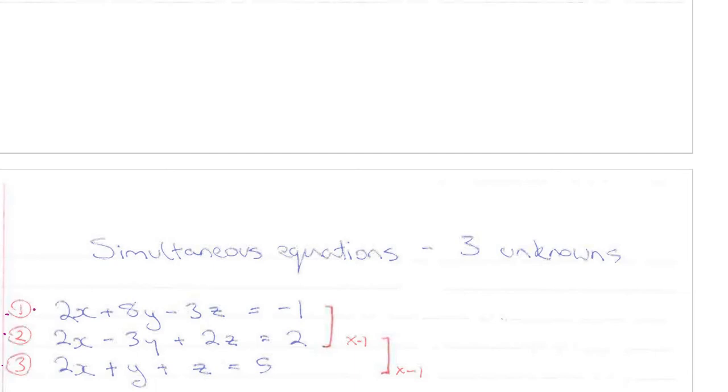The first step is to label our three equations 1, 2 and 3, so we can refer to them later. The strategy is to take two equations at a time, for example, here we are going to take 1 and 2, and we eliminate one variable.